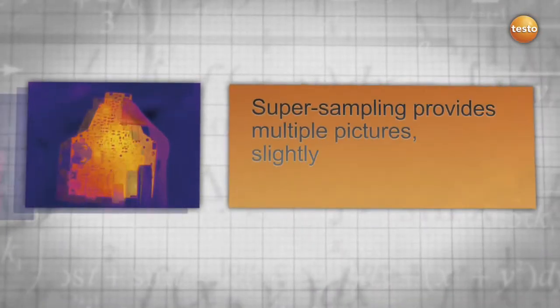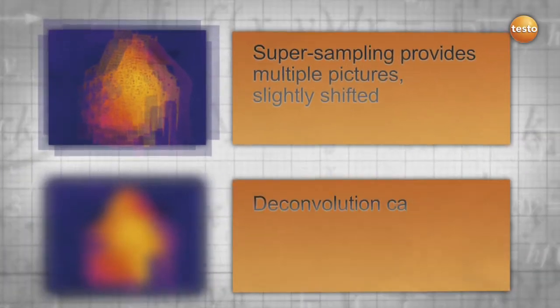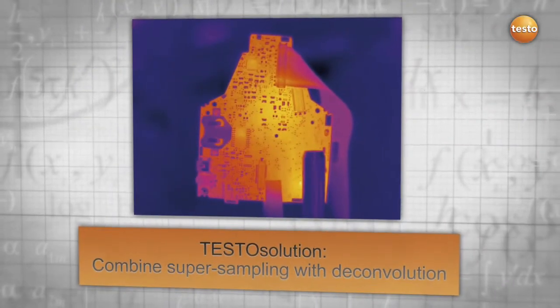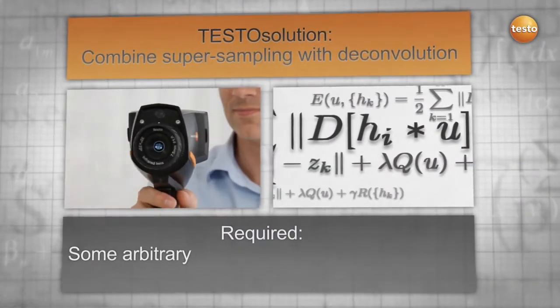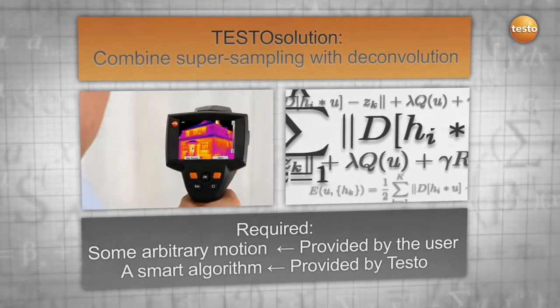The result: super sampling can take multiple images slightly shifted, while deconvolution reduces the blurriness. The combination of both is a Testo solution. All we need is the natural movement of your hand and a smart algorithm provided by Testo.